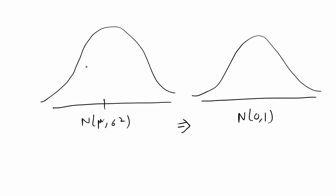Hey guys! In this video I wanted to do a quick tutorial on how you can convert any normal distribution that has mean mu and variance sigma squared into the standard normal distribution, which is normally distributed with mean 0 and variance 1.